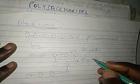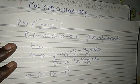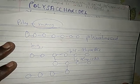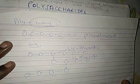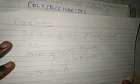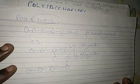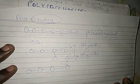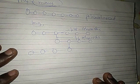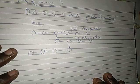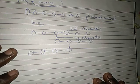So how do the 1,4 and 1,6 bonds occur? The branching is not done at the fourth carbon but at the sixth carbon, as we saw in the structure of glycogen if you remember.